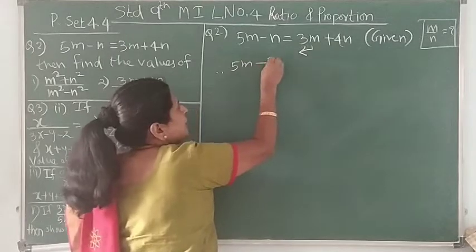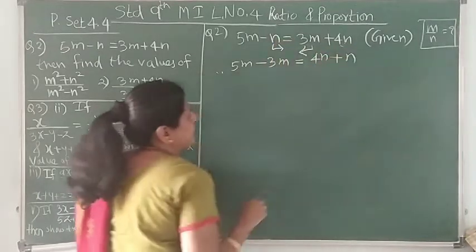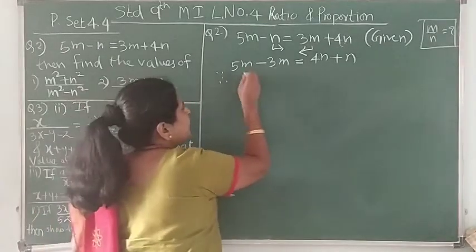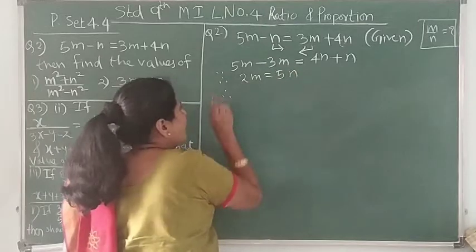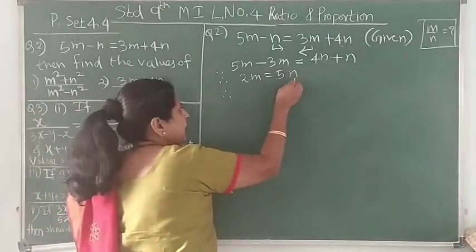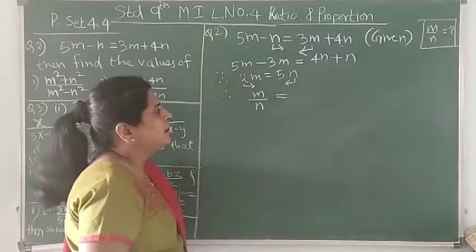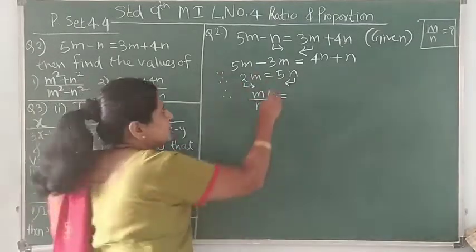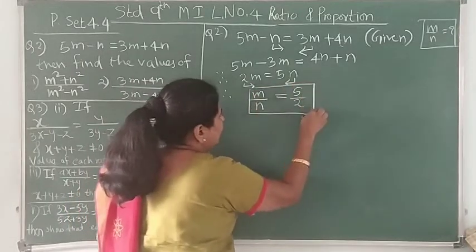So 5m and this positive 3m will become minus 3m on the left side. That equals to 4n, and minus n will go to that side as plus n. So we have collected the m terms on the left and n terms on the right. Now simplifying: 5 minus 3 gives 2m, and that equals 4 plus 1 which is 5n. Now as we want the ratio m upon n, we transpose n to get m upon n, and 2 goes to the right side, giving us m upon n is equal to 5 upon 2.